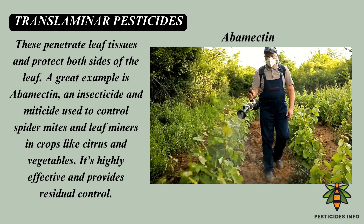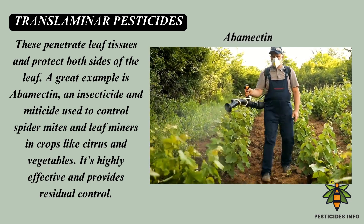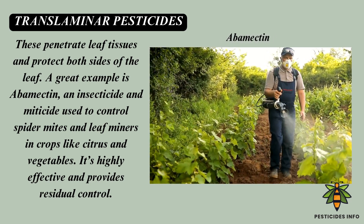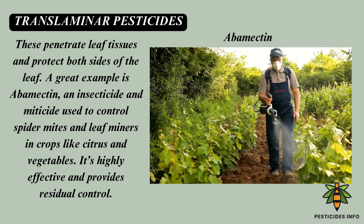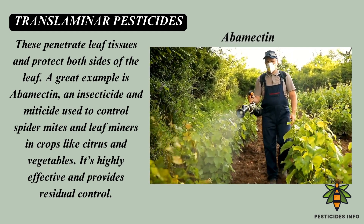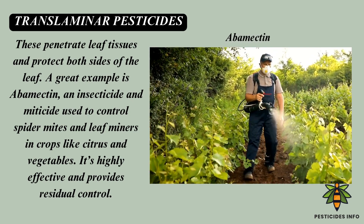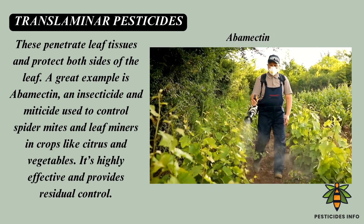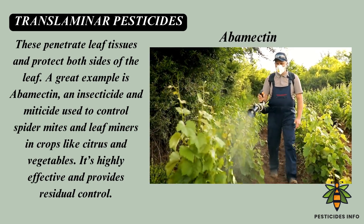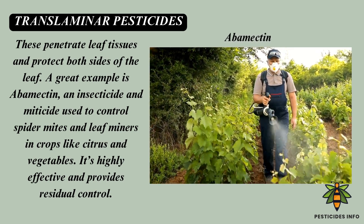One important category is translaminar pesticides. These penetrate leaf tissues and protect both sides of the leaf. A great example is abamectin, an insecticide and miticide used to control spider mites and leaf miners in crops like citrus and vegetables. It's highly effective and provides residual control.